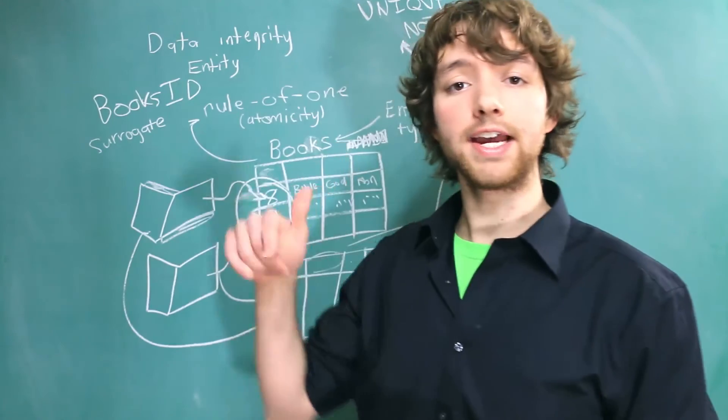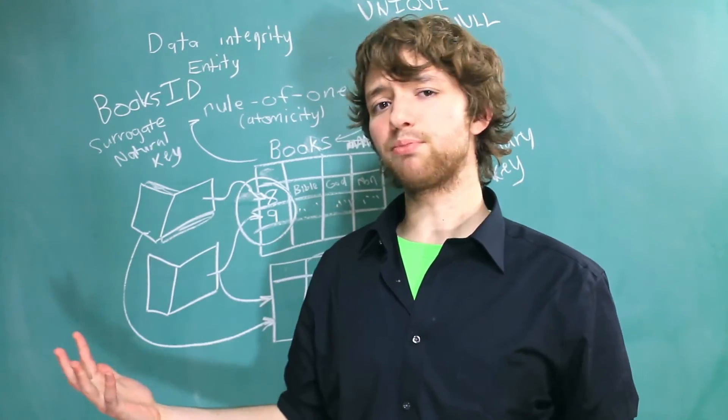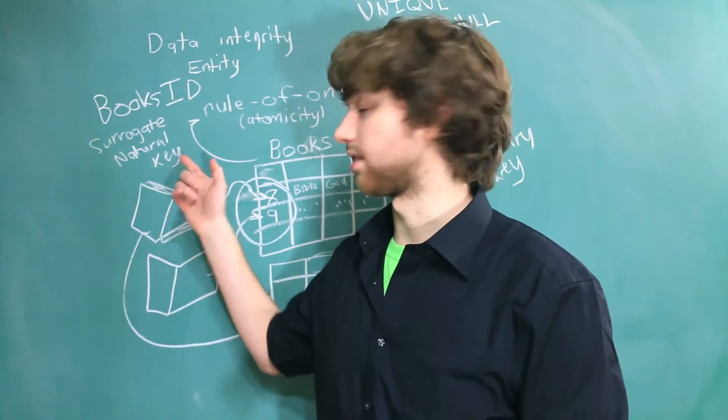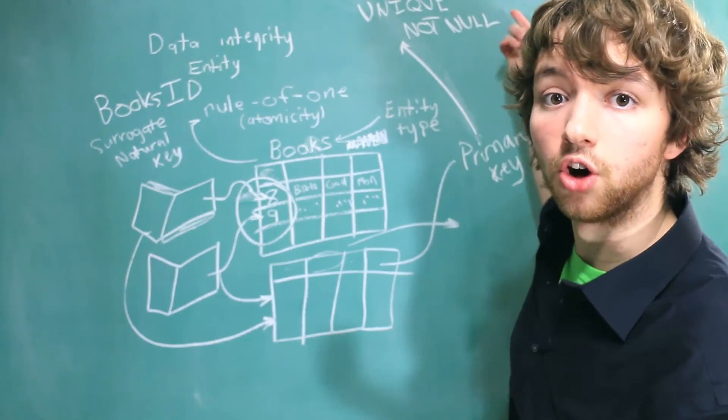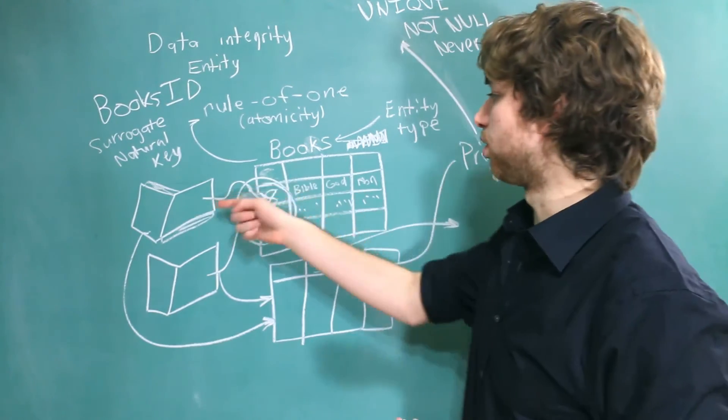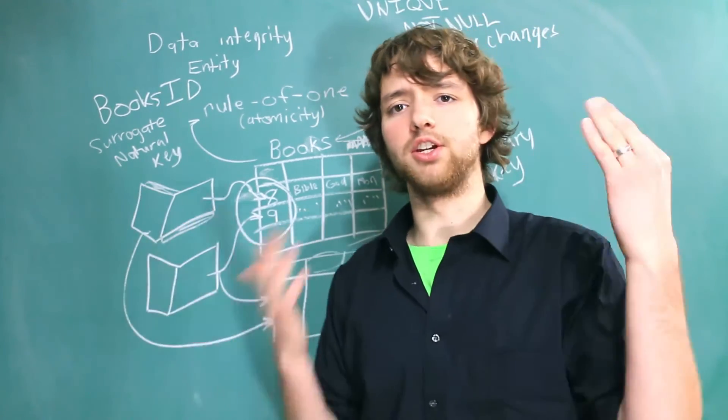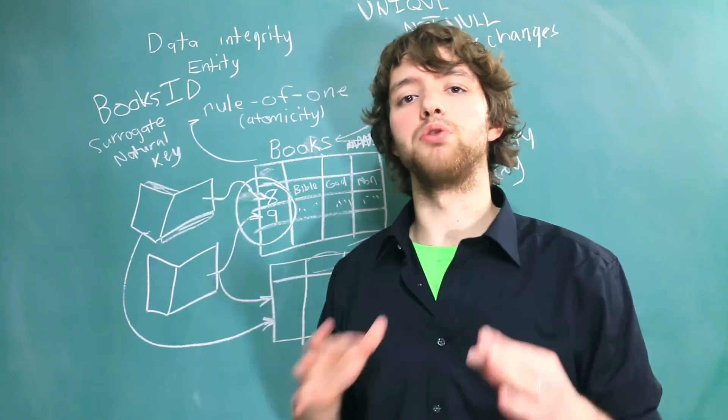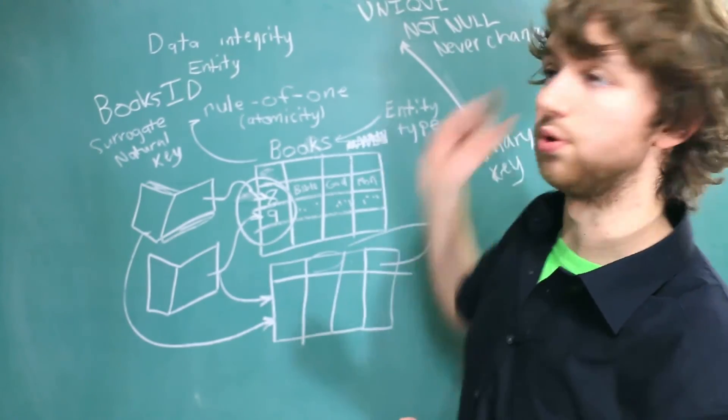That's in contrast to a natural key. A natural key is something that has real world meaning. For example, this library might give every book they ever get a code. And they could use that as the natural key. The only things that are very important is that the key is unique, not null, and in addition to this, it never changes. I mean, think about it. If we had this book with the ID of 8 and then one day it changed to 9 or 10, is it a new book or is it the same book with a new ID? That's confusing. That throws our integrity into question.